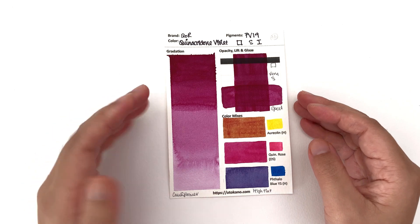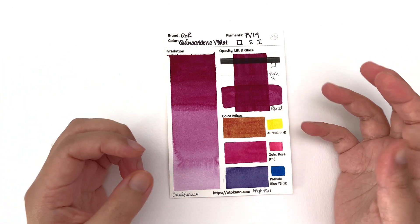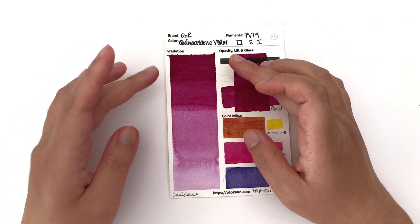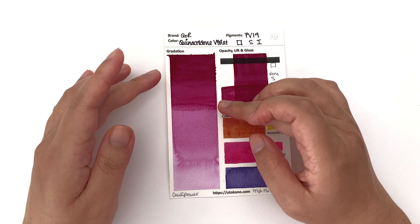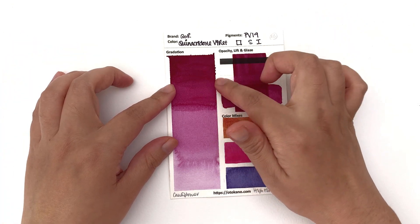First up we have the Quinacridone Violet, and this is a red-y violet color. It has these two-tone things happening. Some areas are more violet-y, some areas are a bit more red, especially that color difference shows up in the mass tone.